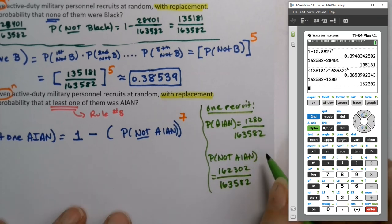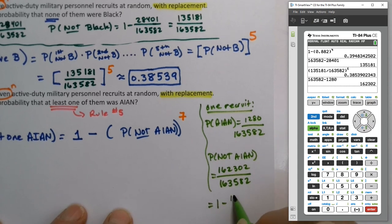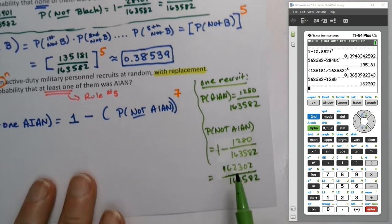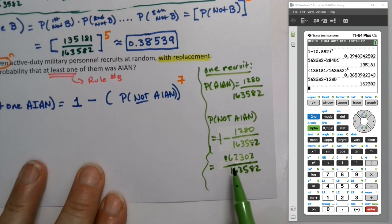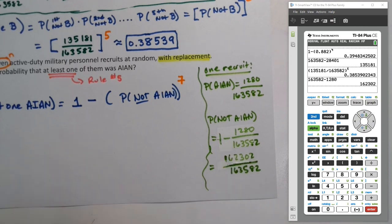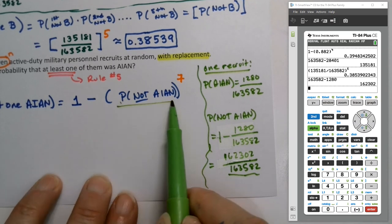Because it's 1 minus that. I have this in reverse order. Let me rewrite this one second. There, that's a little better. So what you're taking is 1 minus the probability of AIAN, which means you take 163,582 subtract away the 1,280 and you're left with 162,302 divided by 163,582. That's the number you're going to put in right there.